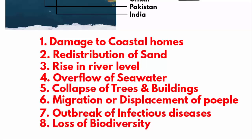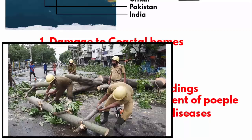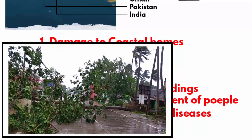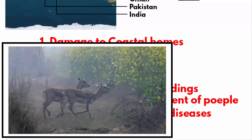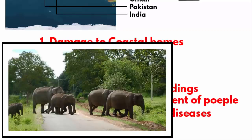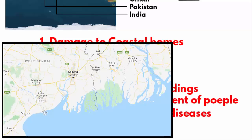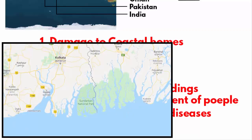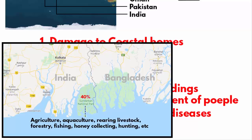The eighth impact is loss of biodiversity. Severe cyclones cause varying degrees of destruction including tearing branches from trees and destroying vegetation. This results in loss of animal habitats, interrupting and changing ecosystems. Cyclone Amphan has caused serious damage to the ecologically sensitive Sundarbans region, which is shared by India and Bangladesh. Agriculture, aquaculture, livestock rearing, forestry, fishing, honey collecting, and hunting are the main occupations for most inhabitants of the Sundarbans.